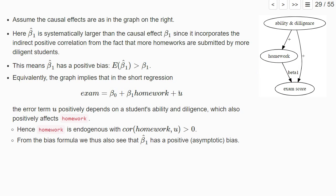And if we don't add this in our short regression, and it's hard to add because we don't have a measure for diligence or ability, basically our estimate of beta 1 will also estimate this indirect positive relationship. So it will be systematically larger than the true causal effect of submitting an additional homework problem set on the exam score. So our graph suggests that there is a positive bias in our OLS estimator.